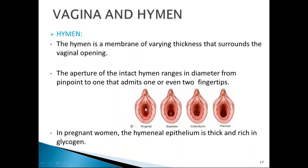The hymen is a membrane surrounding the vaginal opening; its thickness and aperture vary. In a virginal hymen only the tip of a finger is admitted; in a parous woman up to two fingers may be admitted. Its shape varies — it can be septate or cribriform. An imperforate hymen presents with primary amenorrhea, pain abdomen, and a central abdominal mass. For cryptomenorrhea, cruciate incision of the hymen is the treatment of choice.